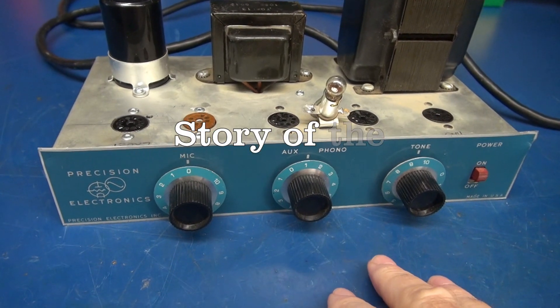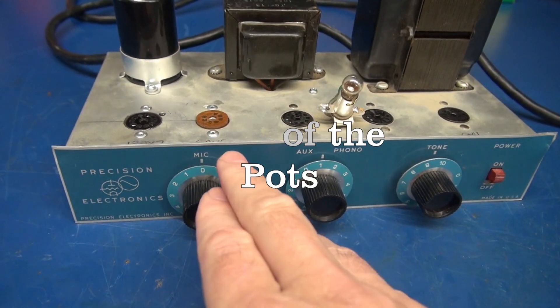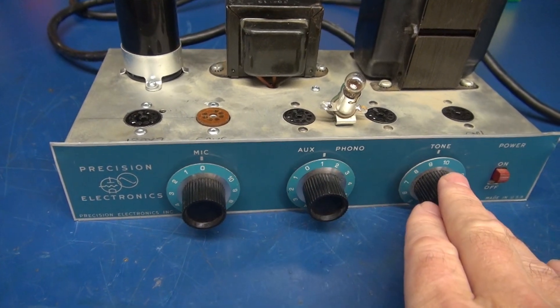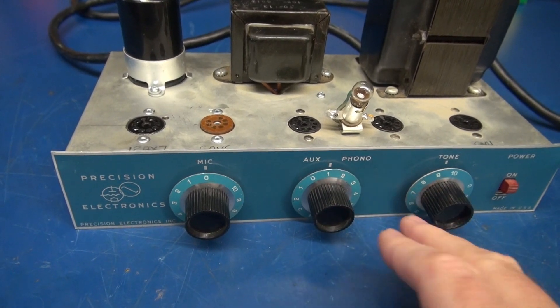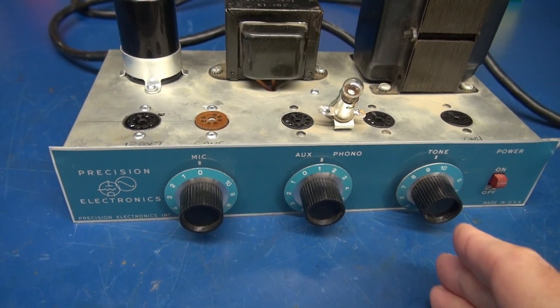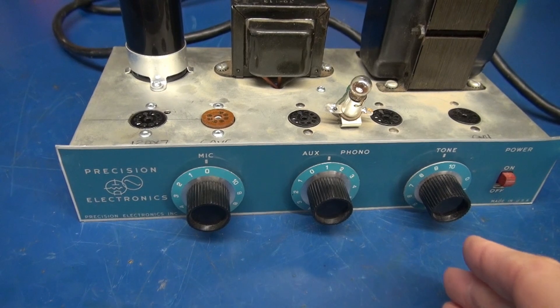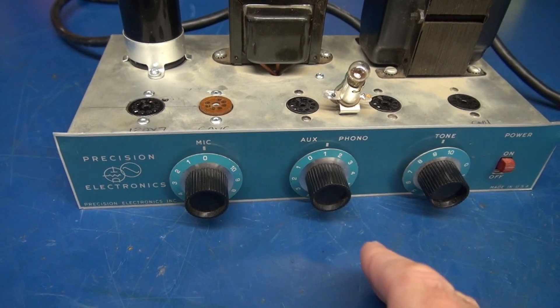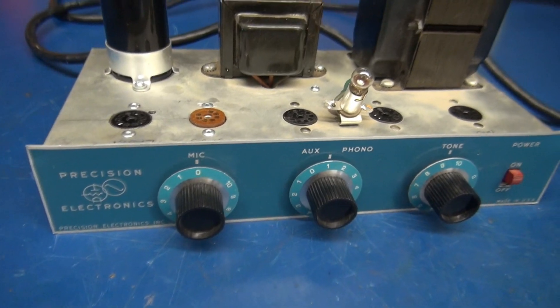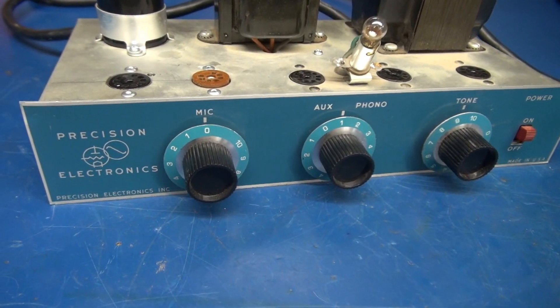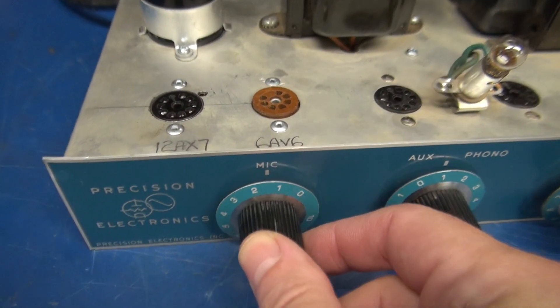After modification of the amplifier, I need to change the value of the three pots. So we need to have this as volume, treble, and bass, but the value of those pots is not correct according to my schematic. So I need to replace the pots themselves and put these knobs back on. And as you can see, these are really cool looking knobs.